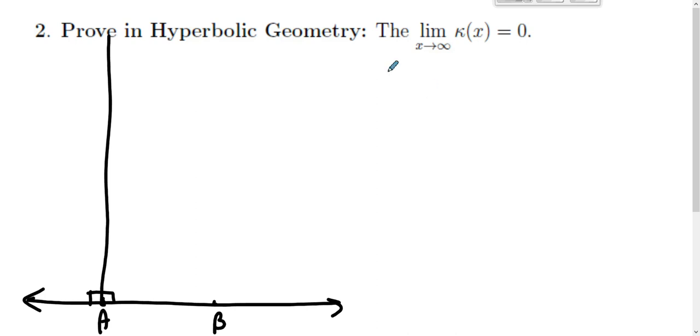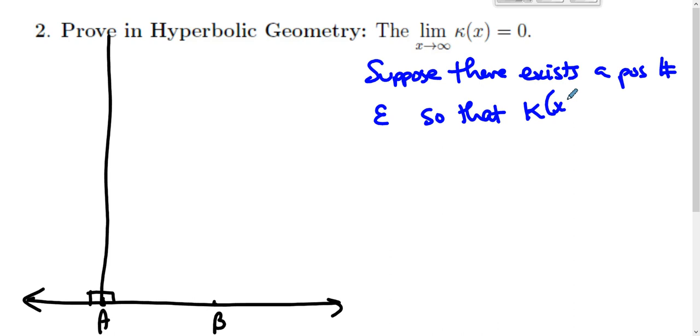So what we're going to do in this case is we're going to suppose, for the sake of contradiction, there exists a positive number, call it epsilon, so that kappa of x is greater than epsilon for every x. Let's pretend we don't get to zero. There's a bound, and we don't get closer to zero than that.